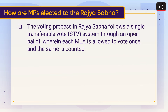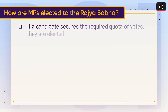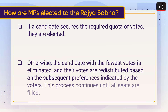Now let's discuss how MPs are elected to the Rajya Sabha. The voting process in Rajya Sabha follows a single transferable vote system through an open ballot, wherein each MLA is allowed to vote once. MLAs submit a list of candidates based on their preferences. Votes are then counted with each MLA's first preference carrying the most weight. If a candidate secures the required quota of votes, they are elected; otherwise, the candidate with the fewest votes is eliminated and their votes are redistributed based on subsequent preferences. This process continues until all seats are filled.